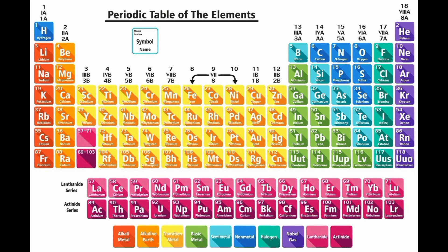The periodic table of elements has several important functions in the field of chemistry and beyond. Organization: the table organizes the elements according to their properties, making it easier to understand and predict their behavior in chemical reactions. Prediction: the periodic table allows scientists to predict the properties of elements that have not yet been discovered, based on their position in the table and the properties of neighboring elements.